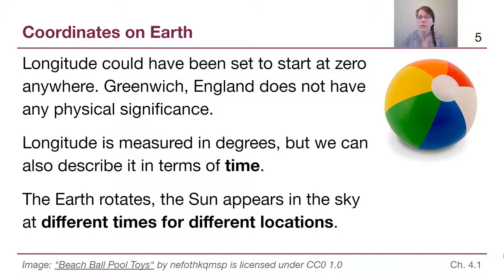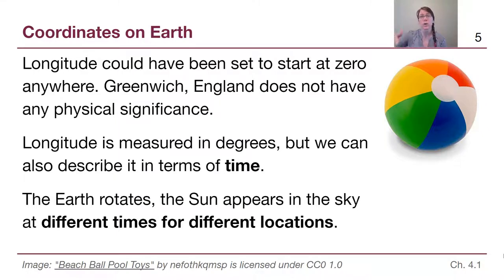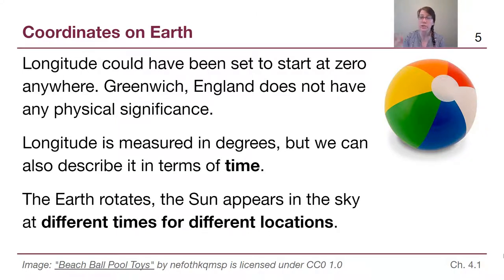Another thing to keep in mind: longitude is measured in degrees from zero to 360, but we can also describe it in terms of time. Here in Grand Rapids I know we're at 43 degrees north latitude — I can see the north star is 43 degrees above the horizon. But I don't have our longitude memorized because it's not useful day-to-day. What I do know is that I'm in the eastern time zone, and my friend in California is three time zones away. We already tend to think about east-west differences in terms of time.